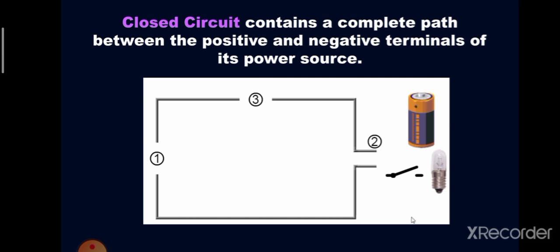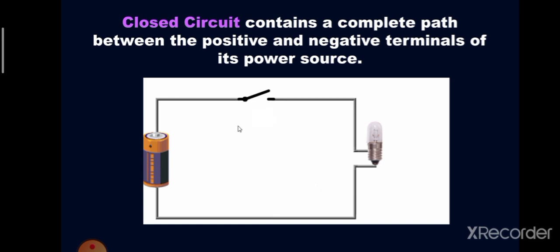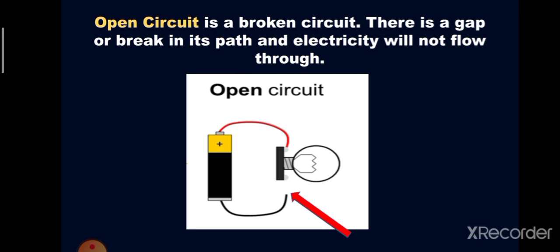The electricity moves from the battery or the source to the light bulb or the load through the connecting wire. Switch it on and the bulb will light up. This is an example of a closed circuit — the path is complete. If the circuit is broken, we call it an open circuit. The electricity will not flow if there is a gap or break in its path. The light bulb will not light up in an open circuit.